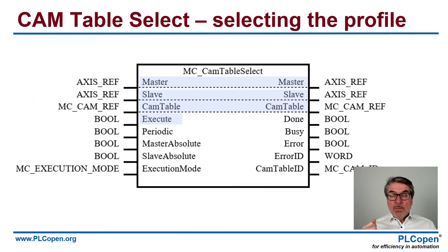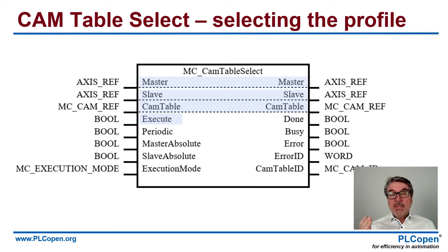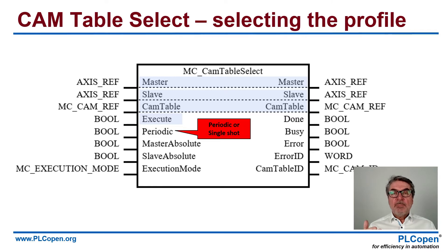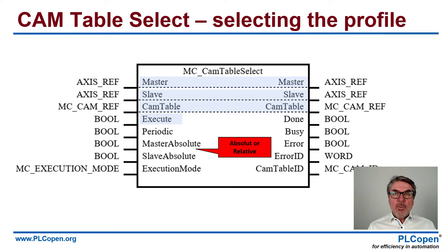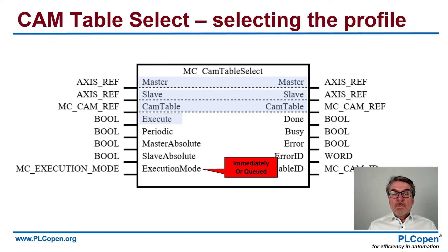For this, we select a CAM table and we use the function block CAM Table Select, where you see we have a master, a slave, and a CAM table that we select upon. We have a periodic input — if we do repeat or we have a single shot — and we select if we want absolute or relative coordinates. And we select the execution mode: immediately or queued.